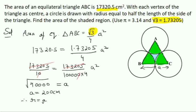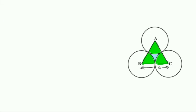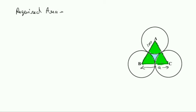Now find the area of each sector. Formula: area of sector = πR²θ/360. The radius is half the side, so R = 200/2 = 100 cm. Theta = 60° because the triangle is equilateral. Area of sector = π × 100² × 60/360.